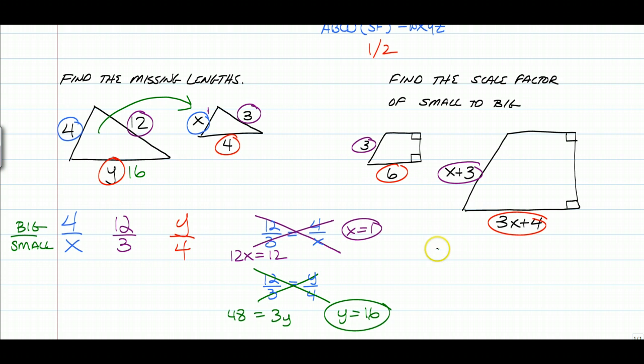So you're going to have 3 over X plus 3 is equal to, make sure you go in the same order, 6 over 3X plus 4. Do your cross-multiplying. 9X plus 12 is equal to 6X plus 18. Solve for X. You get 3X is equal to 6. So X is equal to 2.